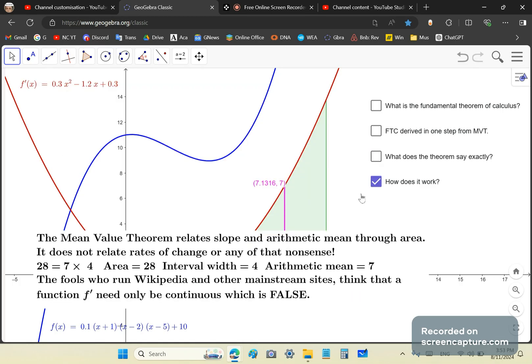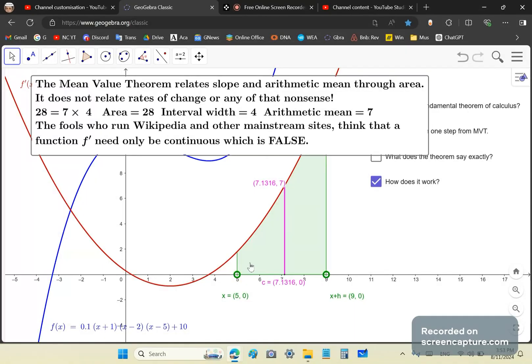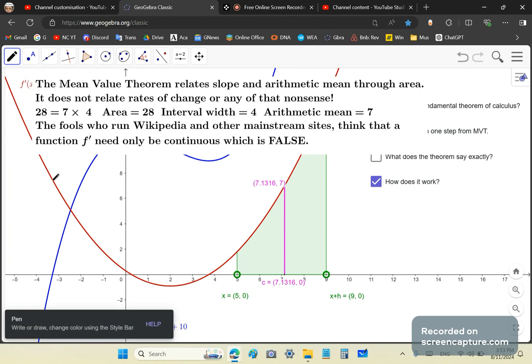So the mean value theorem and fundamental theorem of calculus are the same thing. How does it work? Very simple. You take the arithmetic mean of all the y ordinates and there may be more than one. In this case, there are because on this side here, there's another magenta line. But we're not going to worry about that right now.